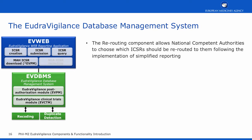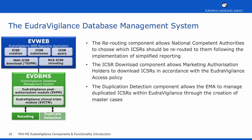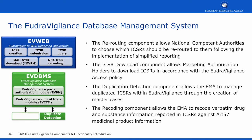EVWeb includes some additional components. The rerouting component allows national competent authorities to choose which ICSRs should be rerouted to them following the implementation of simplified reporting. The ICSR download for marketing authorisation holders allows them to download ICSRs in accordance with the EudraVigilance access policy. The duplicate detection component allows the EMA to manage duplicated reports through the creation of master cases that link all duplicated ICSRs together. The recoding component allows EMA to recode the verbatim drug and substance information reported in ICSRs against Article 57 medicinal product information.